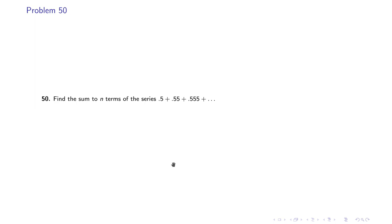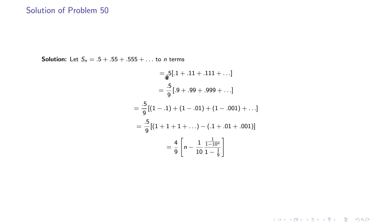Problem 50 is a slightly different problem. We have to find the sum to n terms of the series 0.5 + 0.55 + 0.555 and so on. So in this case, you take out 0.5 common.